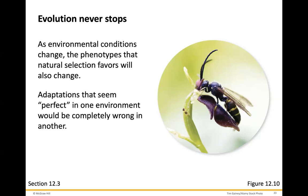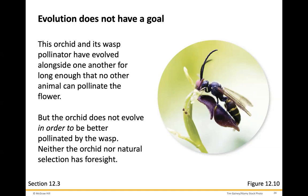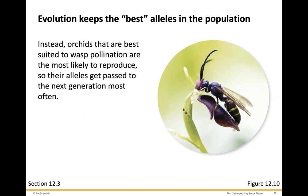Adaptations that seem perfect in one environment would be completely wrong in another. Evolution does not have a goal. This orchid and its wasp pollinator have evolved alongside one another for long enough that no other animal can pollinate the flower. But the orchid does not evolve in order to be better pollinated by the wasp. Neither the orchid nor natural selection has foresight. Orchids that are best suited to wasp pollination are the most likely to reproduce, so their alleles get passed on most frequently.